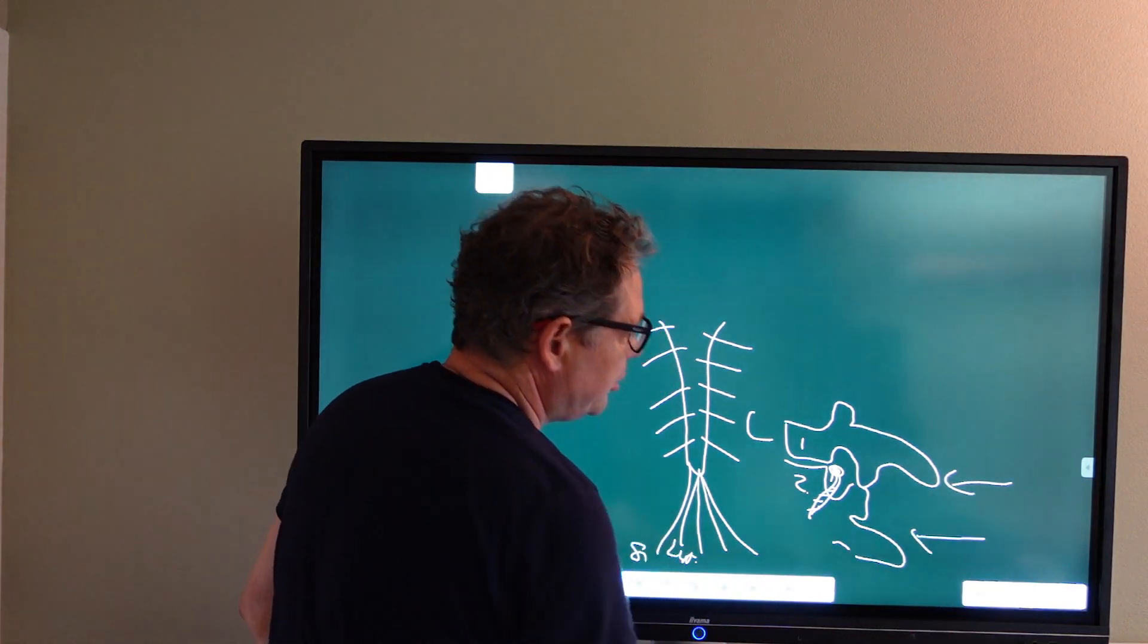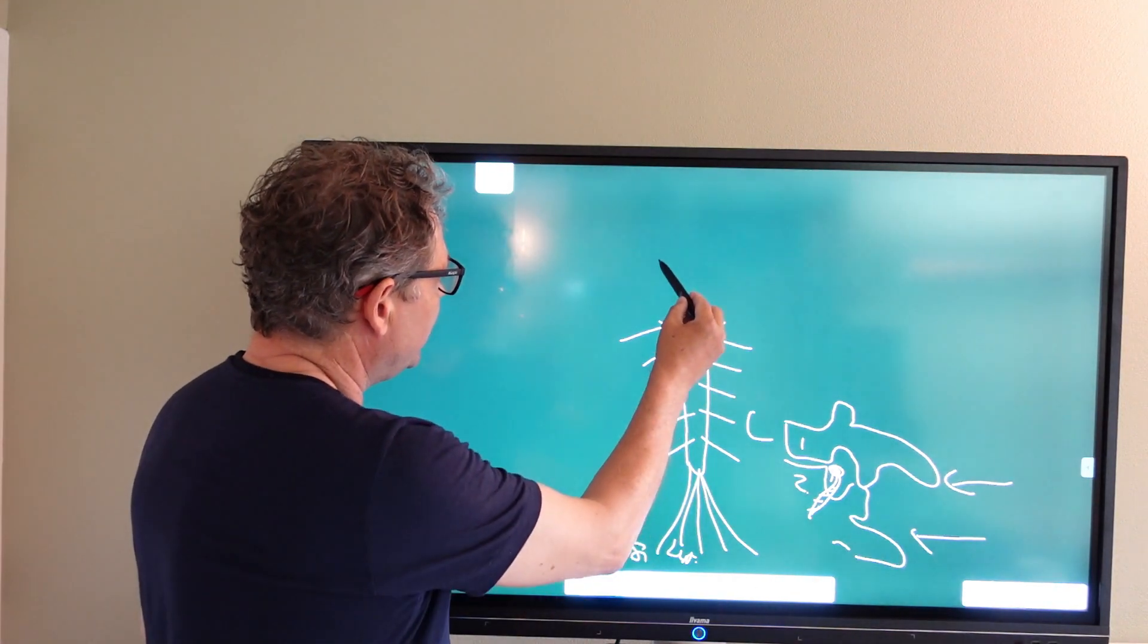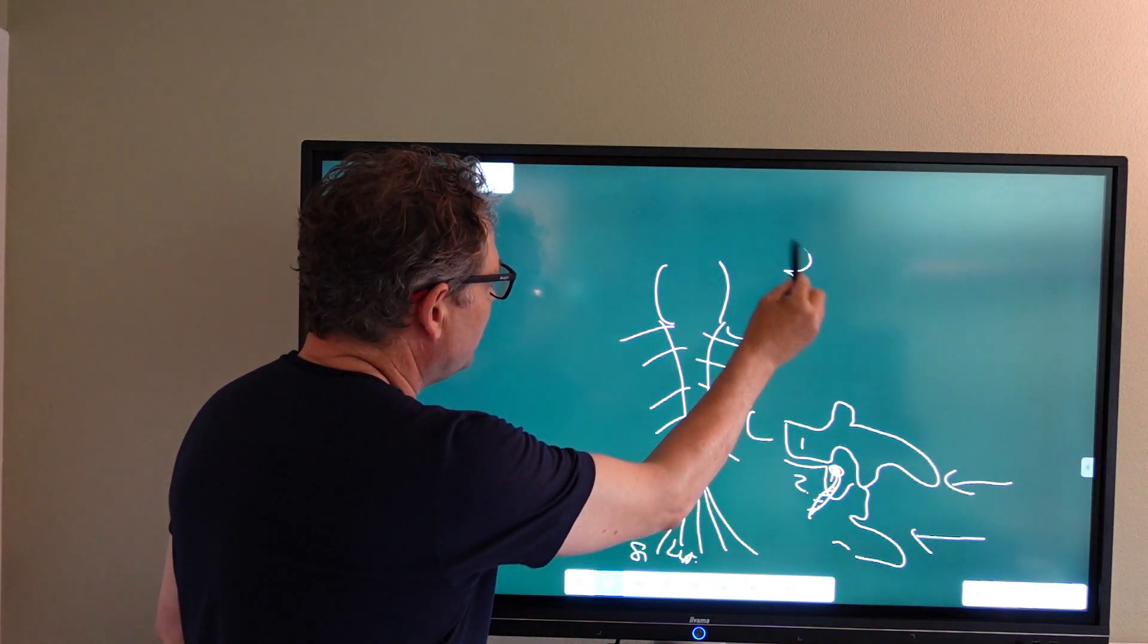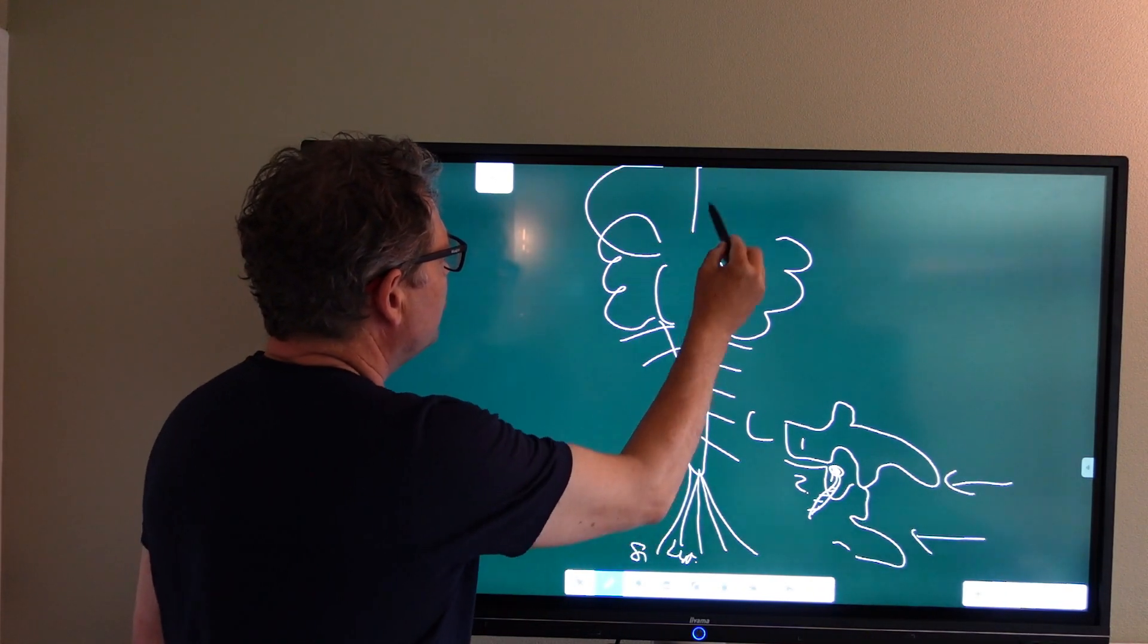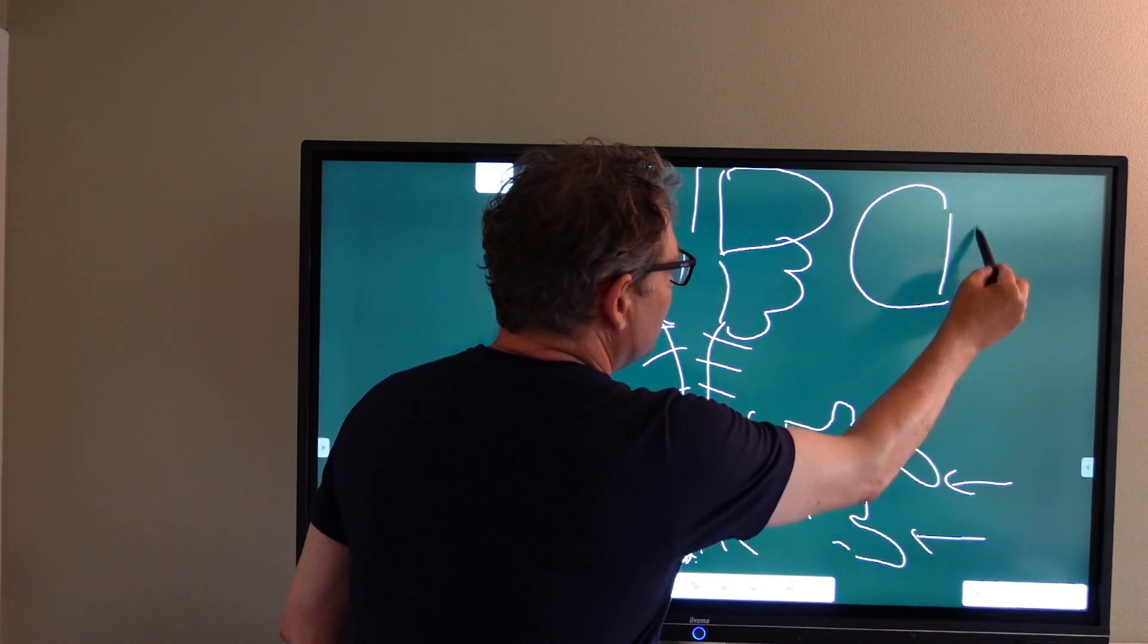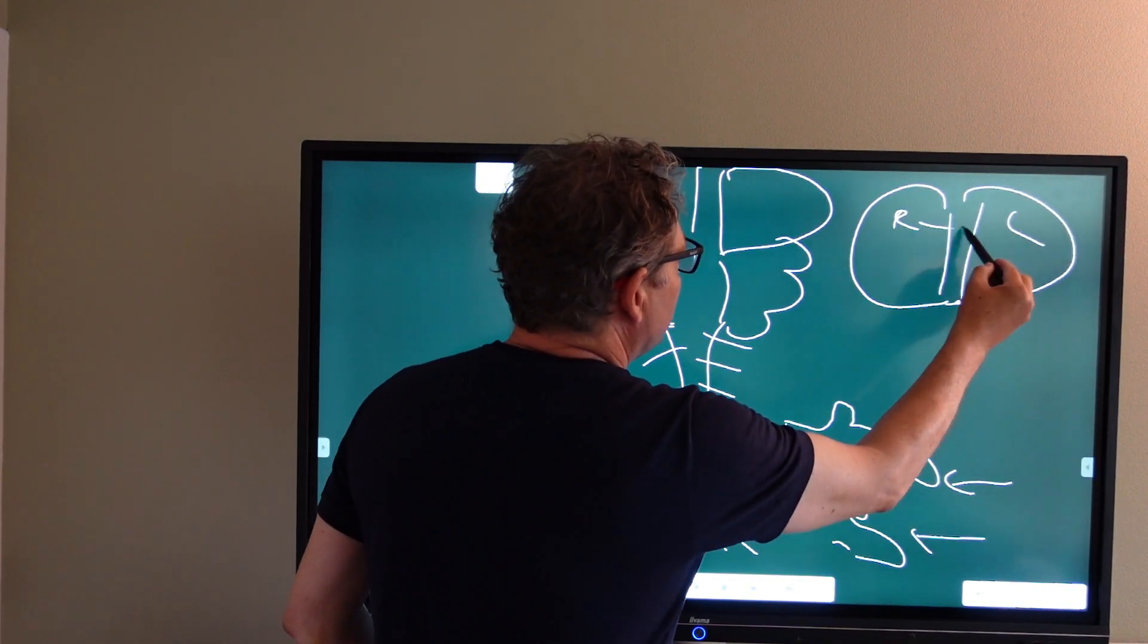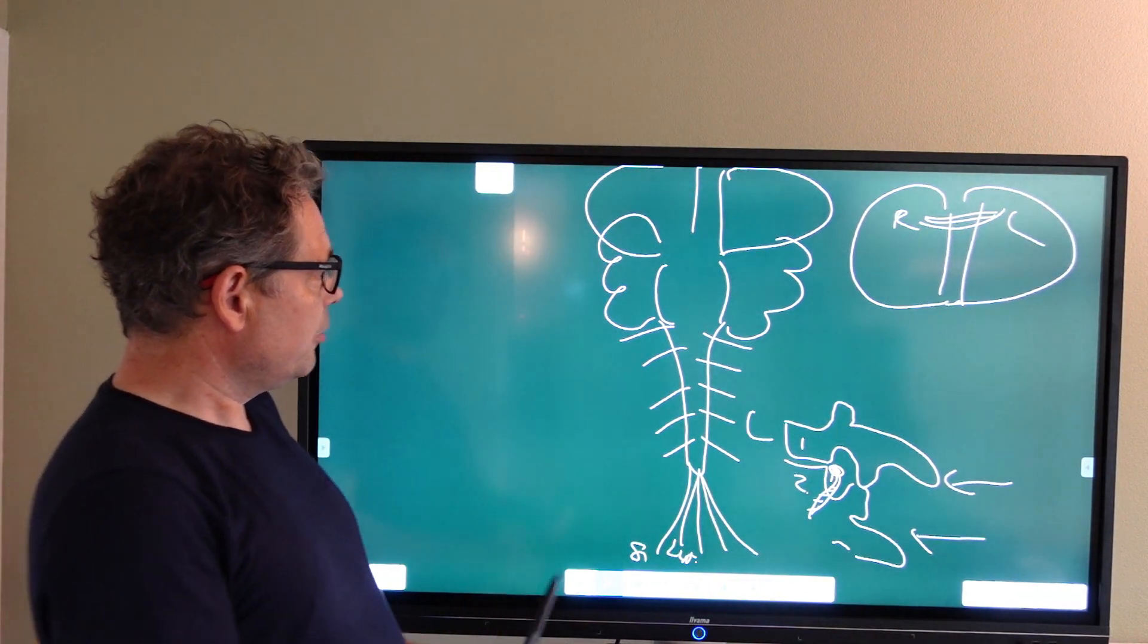This is the spinous process that you can feel under your skin. And then we have the brainstem, we have the cerebellum, we have the two hemispheres. Let's draw them here for convenience. Left, right. This is very important, the bridge between the two hemispheres.